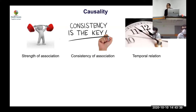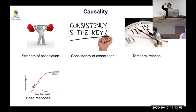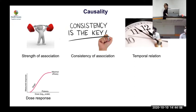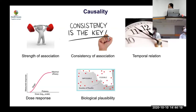The fourth criterion is dose-response: if you have fatty liver, there's more insulin resistance; if you develop steatohepatitis, it's worse; if you develop fibrosis, it's worse still. Similarly with smoking — five cigarettes gives 5% risk, twenty cigarettes gives 50%. So the associations must be consistent, temporally related, and show a dose-response.